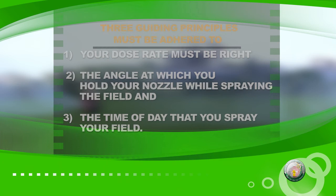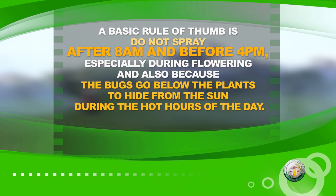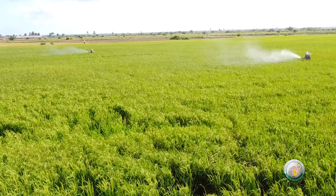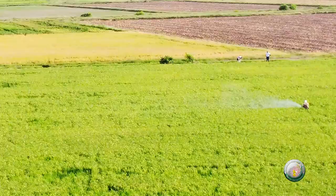A basic rule of thumb is do not spray after 8 a.m. and before 4 p.m., especially during flowering, and also because the bugs go below the plants to hide from the sun during the hot hours of the day. Always use two motor blowers per acre for good wetness of the plants.